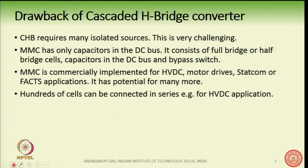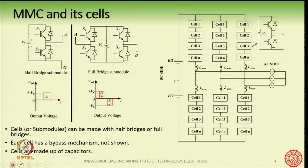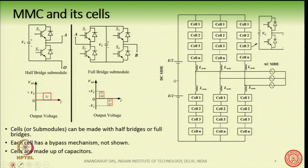In cascaded H-bridge we have seen cells connected in series, but when we talk about HVDC applications for which MMC is very suitable, we are talking about hundreds of cells connected in series. For example, at ±400 kV and 800 MW HVDC, we can connect hundreds of cells in cascade. The concept of modularity and scalability is very much applicable for MMC.